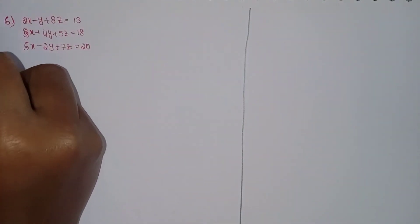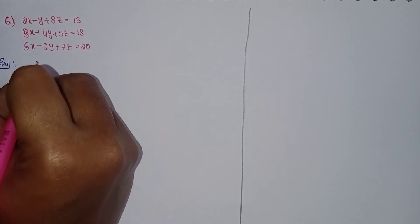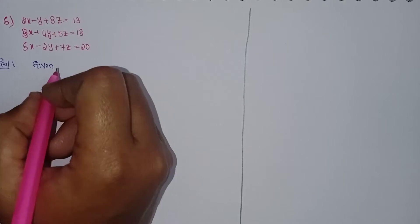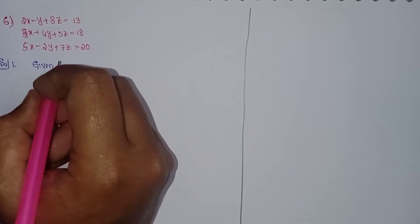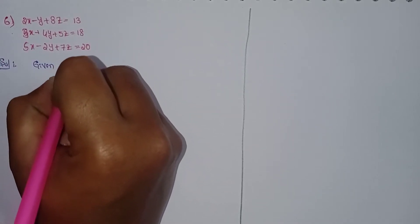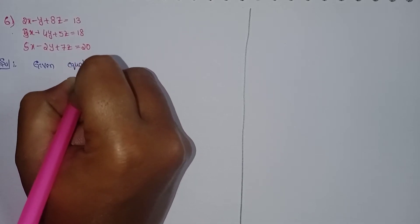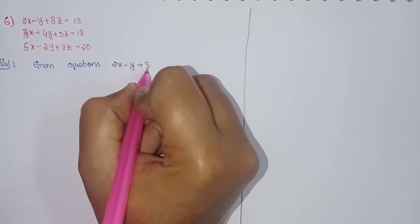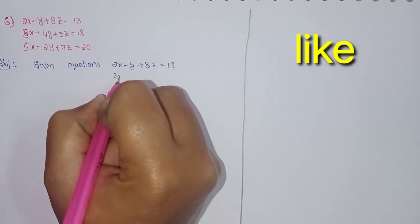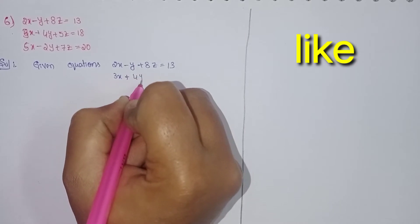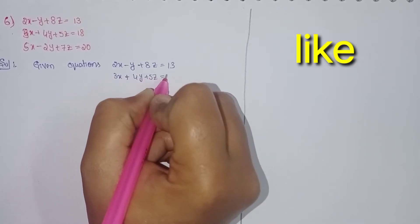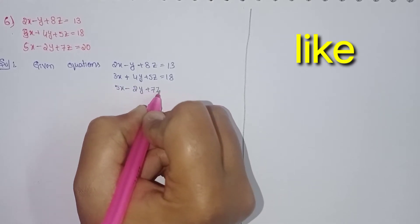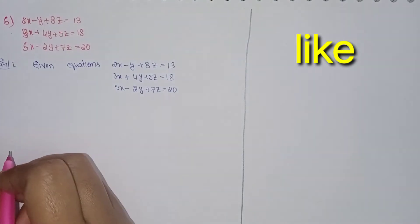Welcome to the Learn Something More YouTube channel. Today we will discuss intermediate first year chapter number three, matrices, exercise 3H, Gauss-Jordan method, question number six. First, write the given equations: 2x minus y plus 8z equals 13, 3x plus 4y plus 5z equals 18, and 5x minus 2y plus 7z equals 20.